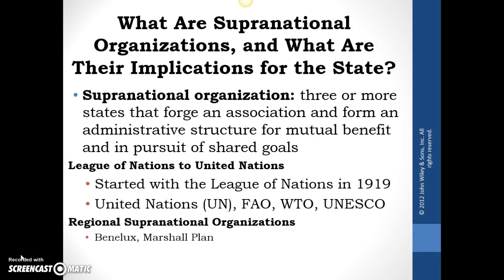World War II happens — starting in the mid-1930s or late 1930s in Europe, with US involvement beginning at the end of 1941. World War II ends in 1945 everywhere in the world, and from it we revive the idea of having a place where countries can talk about their conflicts and try to solve problems without resorting to the kind of total war and massive worldwide devastation that resulted from World War II. That result is what we call the United Nations, or the UN — and you need to know what the United Nations is.